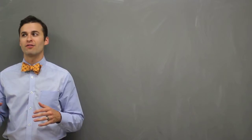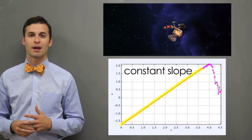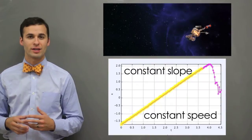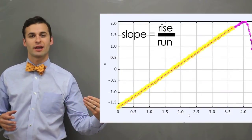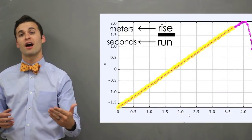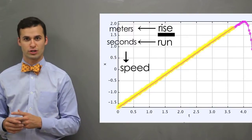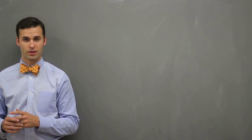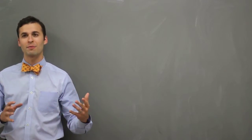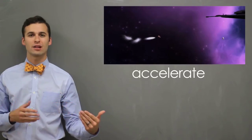Now, if we look at WALL-E as he's flying through space, and we look at his position versus time graph, we can see that WALL-E is traveling at a constant speed when he is not firing the fire extinguisher. Every time he fires the fire extinguisher, he begins to accelerate.